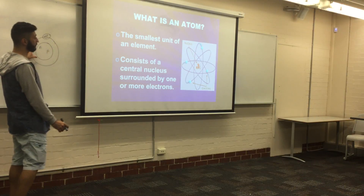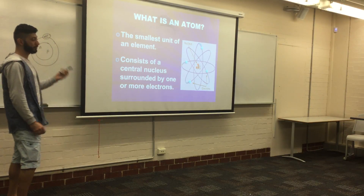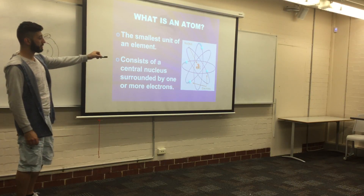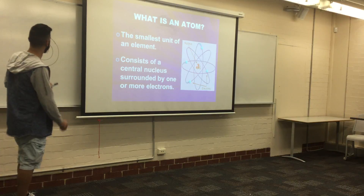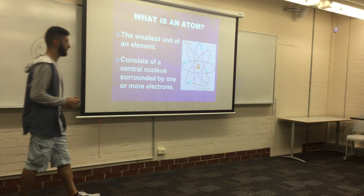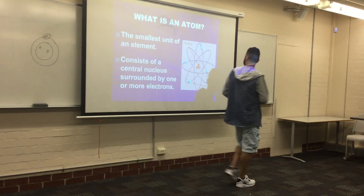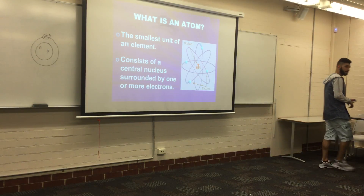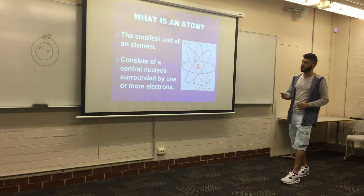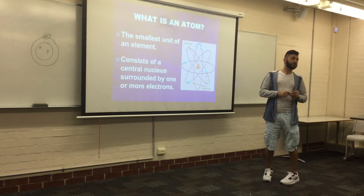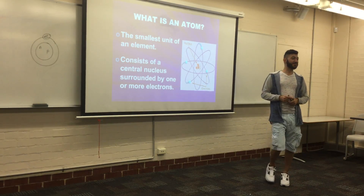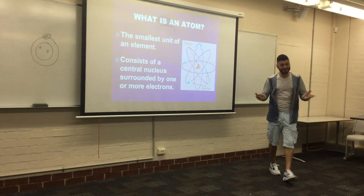If we go back to the simple diagram, depending on which element we use, it will tell us how many electrons it actually has. For example, we've got hydrogen — it's got one electron that revolves around the shell. Do they have to have electrons? Yes they do. You won't find an atom without an electron.